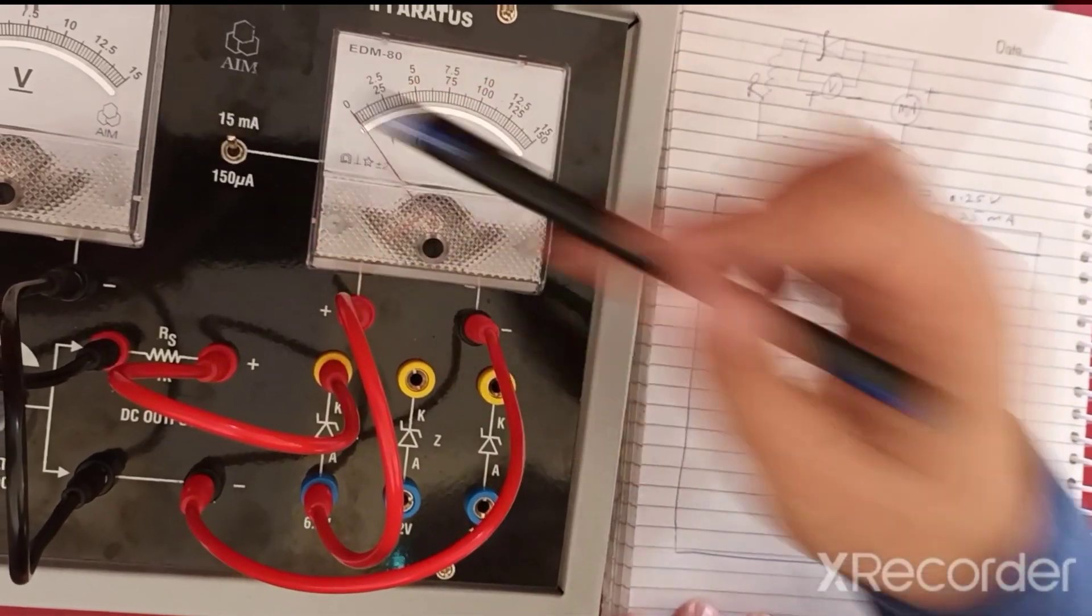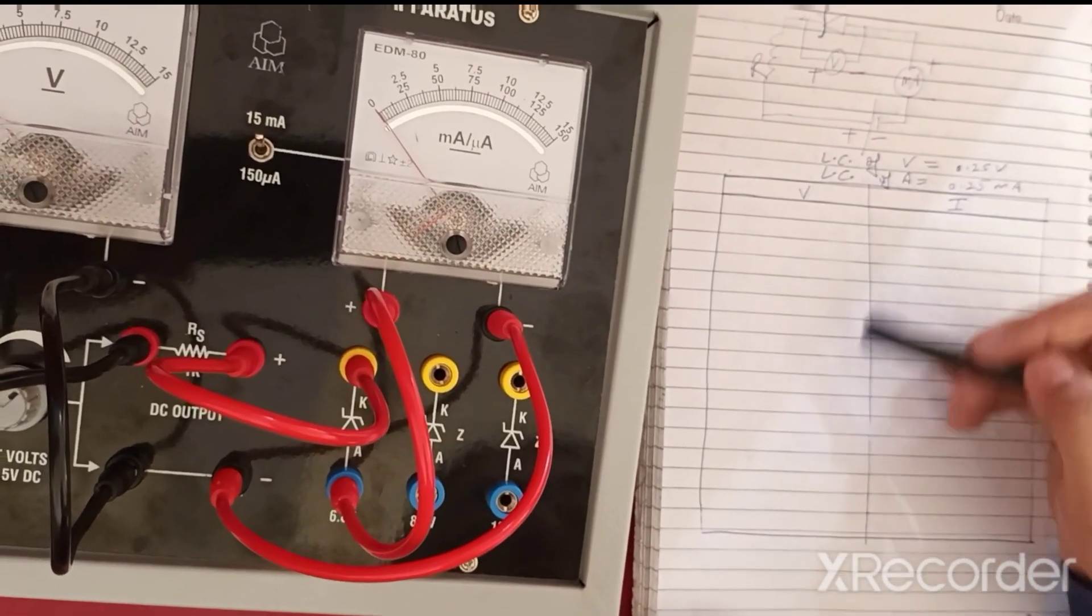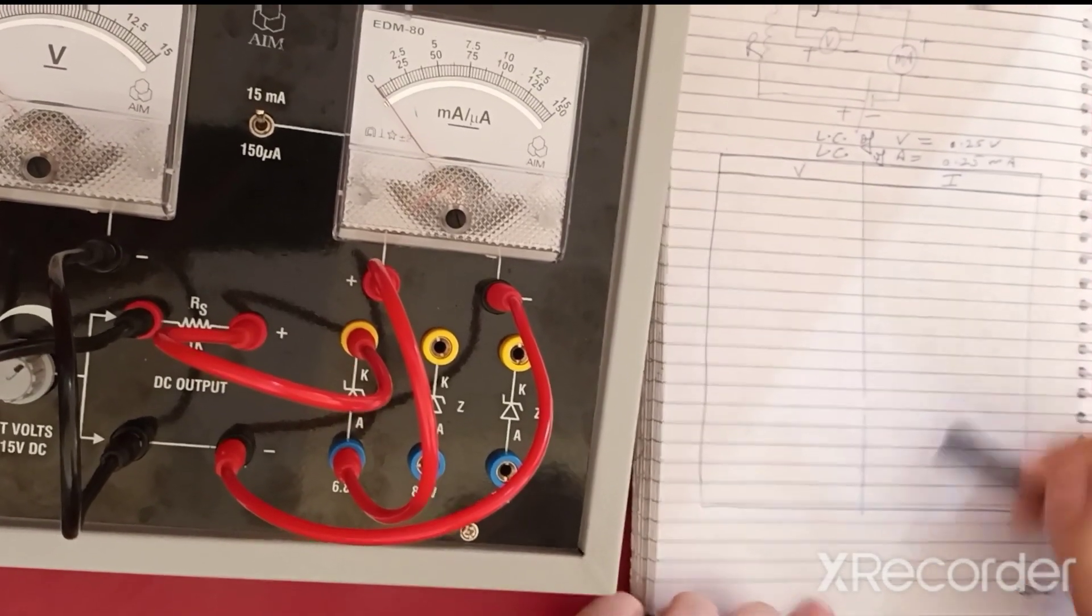You can take as many readings as you can. It is advisable to take at least 20 readings so that we can draw the graph neatly, and when you plot the values, you will get the curve.